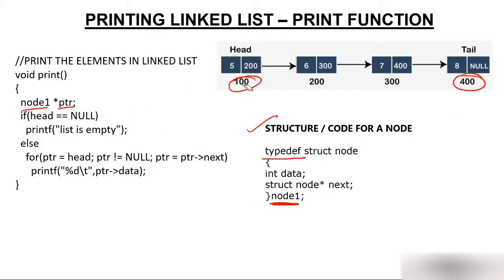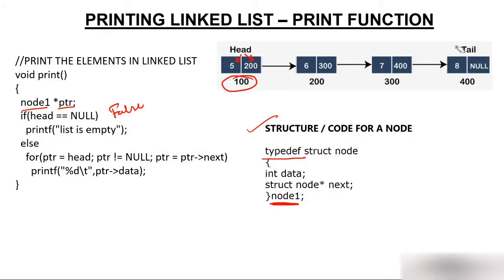First we check: if head is equal to null. Head is a pointer keeping the address of the first node, so head is 100. Is head null? No — condition is false because head is having 100. Don't confuse head with its data value 5; head is 100, head's data is 5, head's next is 200. Similarly, tail is 400, tail's data is 8, tail's next is null.